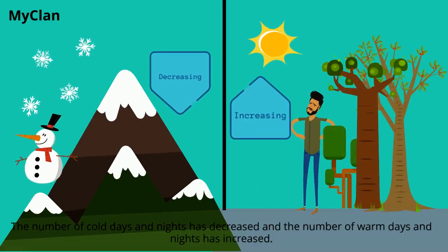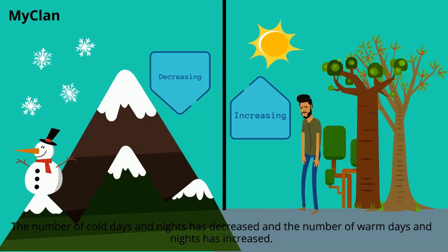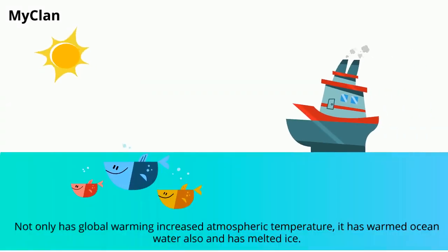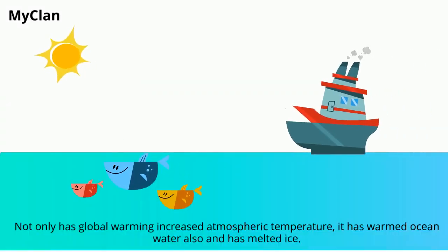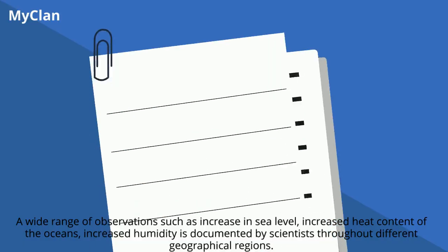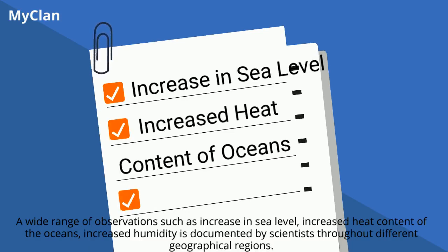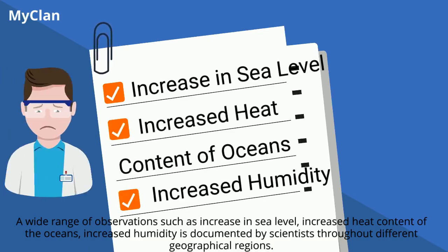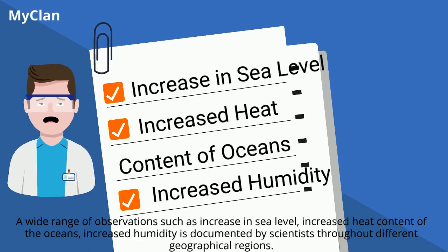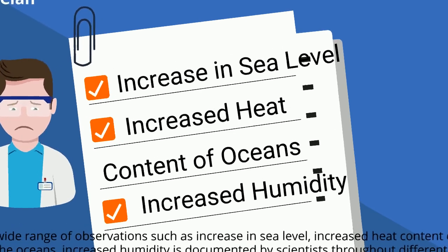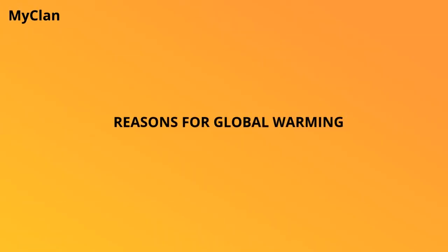The number of cold days and nights has decreased and the number of warm days and nights has increased. Not only has global warming increased atmospheric temperature, it has warmed ocean water and melted ice. A wide range of observations such as increase in sea level, increased heat content of the oceans, and increased humidity is documented by scientists throughout different geographical regions.